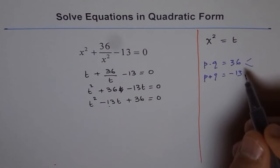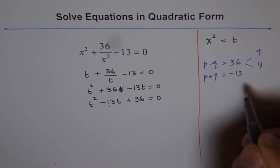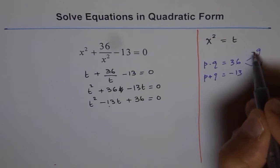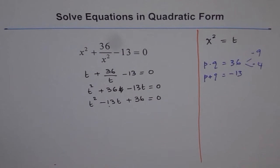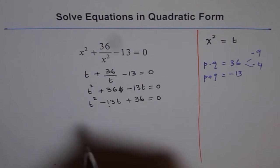So, let's factor and try out. 36 is 9 times 4. Perfect. 9 times 4. But we need some as negatives. So, both should be negative. So, if you add negative 9 and negative 4, you do get minus 13. So, that is factored.